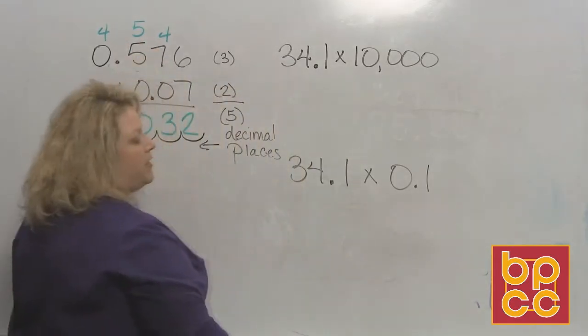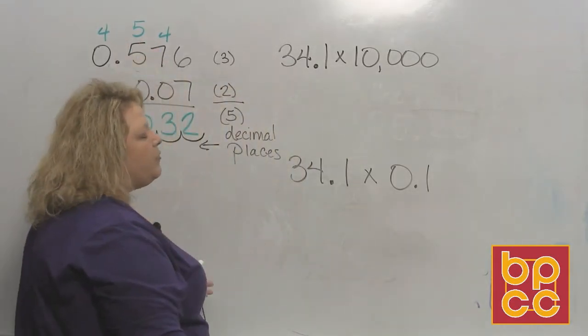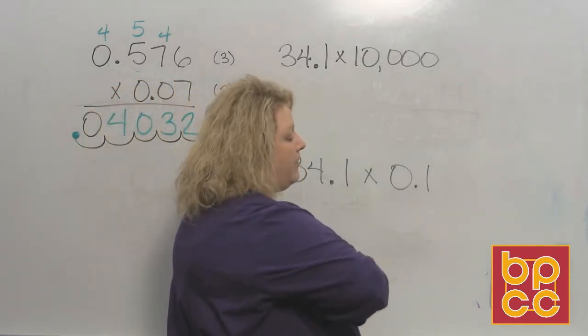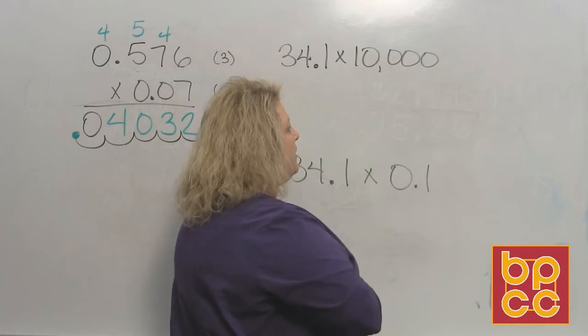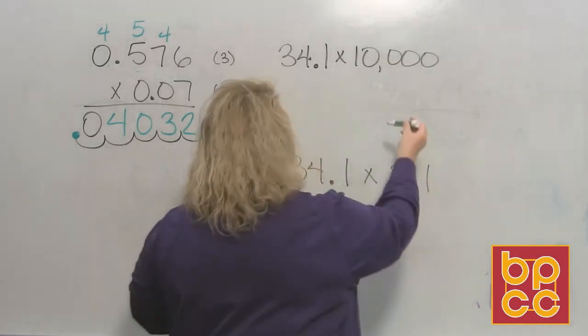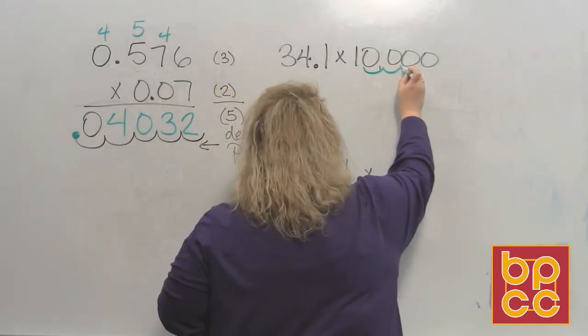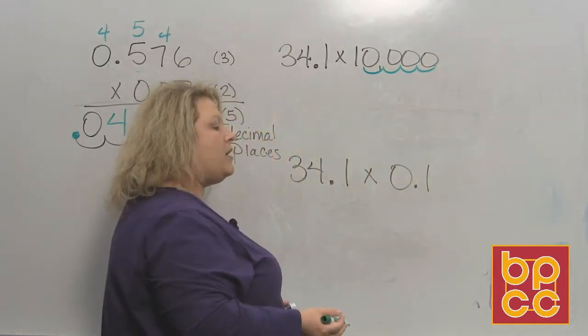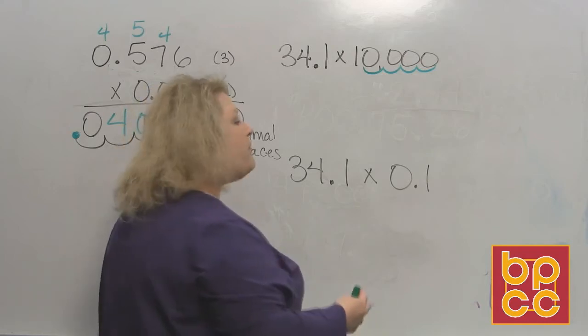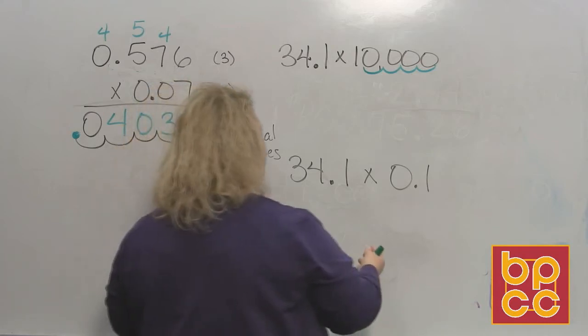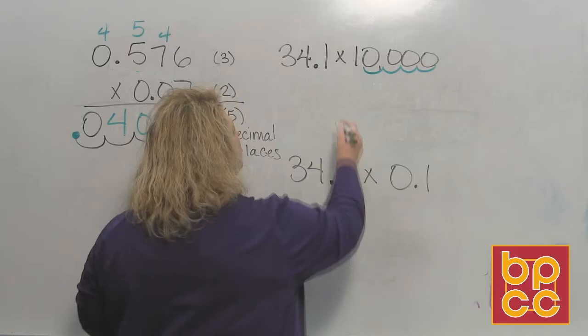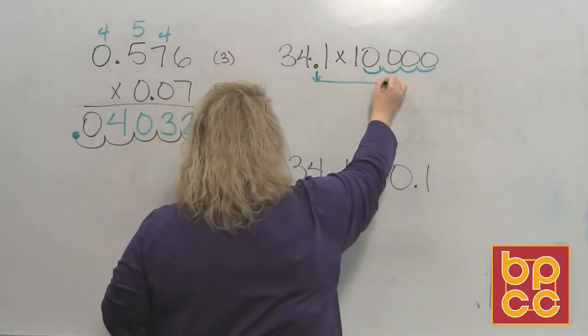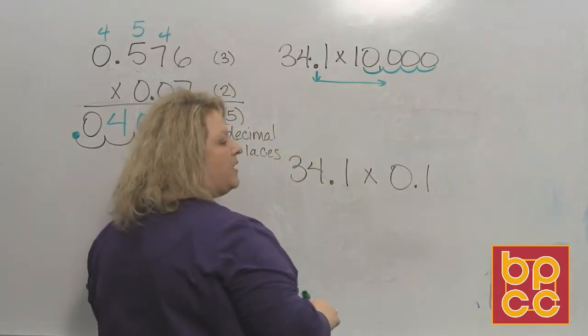Now, let's say you want to multiply 34.1 times the number 10,000. Well instead of doing the multiplication like this, when you multiply by powers of 10, you can do shortcuts. And the shortcut is count how many zeros you have, which would be 1, 2, 3, 4. So 10,000 has 4 zeros. That's how many places we're going to move our decimal. And since we have a big number, 10,000, we're going to move our decimal from where it is to the right that many places.